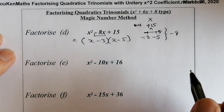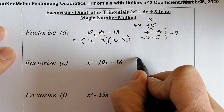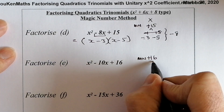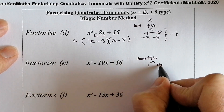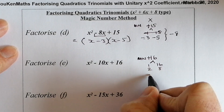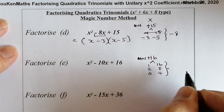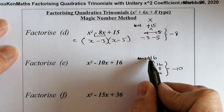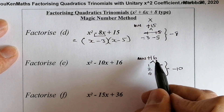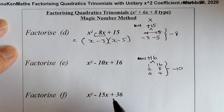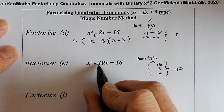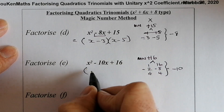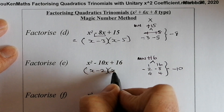Next: magic number is positive 16. Factors: 1 and 16, 2 and 8, 4 and 4. I'm looking to make negative 10 — both numbers negative. The pair 2 and 8 works: negative 2 and negative 8 add to minus 10. So the answer is (x − 2)(x − 8).